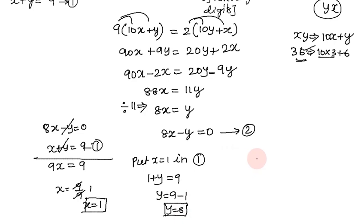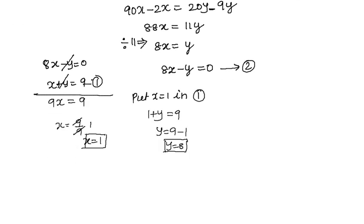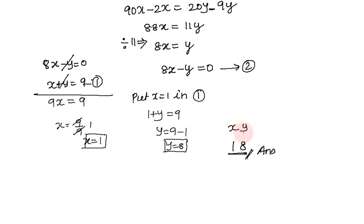Now substitute x equals 1 into equation 1: 1 plus y equals 9, so y equals 9 minus 1 equals 8. The 2-digit number is xy, which is 1 and 8 — so the number is 18.